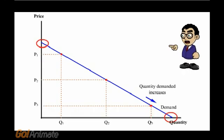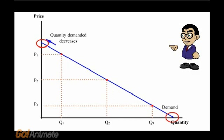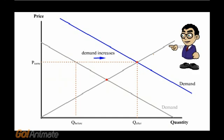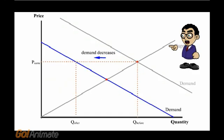In other words, a change in quantity demanded involves moving up or down the same demand curve, while a change in demand involves a shift of the whole demand curve.